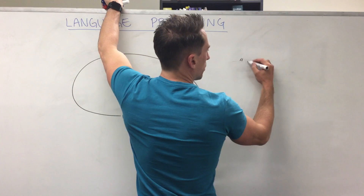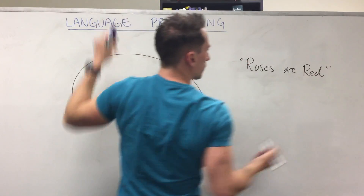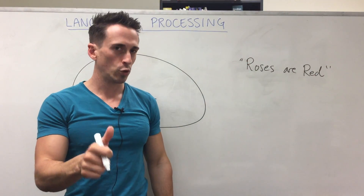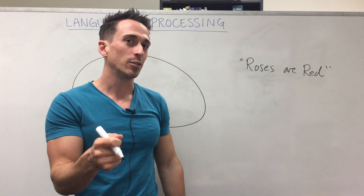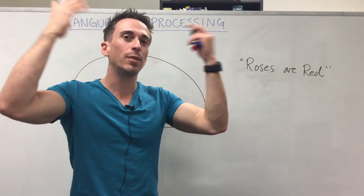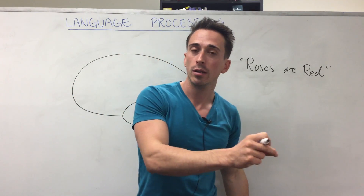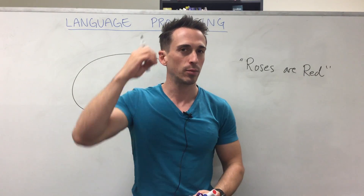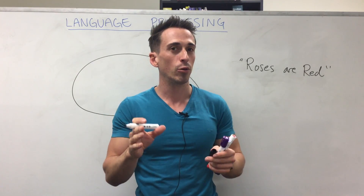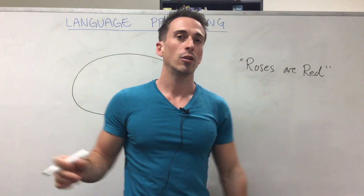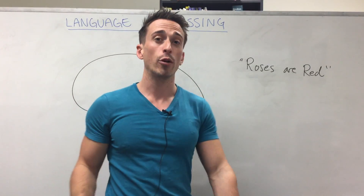I'm going to write something up — "Roses are Red." Can you see that? Can you read it? Can you understand it? Does it bring some sort of image or experience to mind? What if I were to read it to you? "Roses are red." Could you understand what I said, and does it bring some sort of thought to mind — maybe flowers and the colour? So today we're going to explain the processing of being able to read those words and also being able to hear those words. Let's start with reading — the visual aspect of processing language.